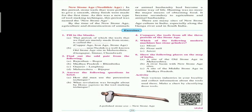New stone age or Neolithic age — 'neo' means new and 'lithos' means stone. In this period, the tools were polished and had a smooth and shiny finish, because new types of tool-making techniques were developed. Tools were mainly made for agricultural work, as hunting had become a secondary activity. In the old stone age, hunting was a primary activity, but in the new stone age, agricultural work became the primary activity and hunting became secondary.